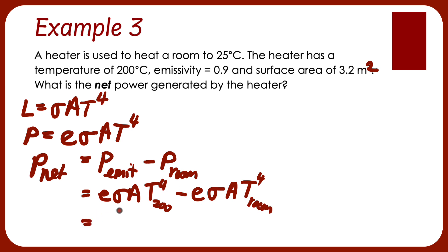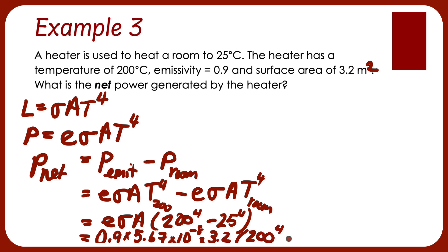I'm going to collect some like terms out here. E sigma A. And then this is going to be 200 to the power of 4 minus 25 to the power of 4. So 0.9 times my favorite constant 5.678 times 10 to the minus 8 times the area which was 3.2 times these numbers. If I pick up my calculator, I'm going to get 6.9 times 10 to the power of 3 watts or just under 7 kilowatts.